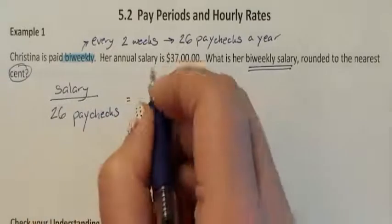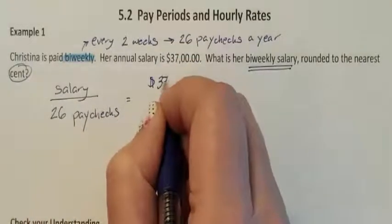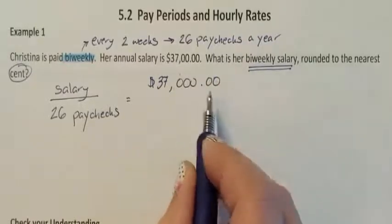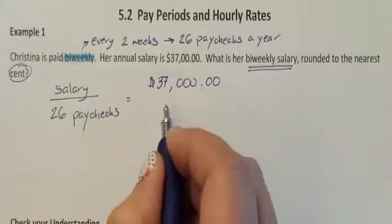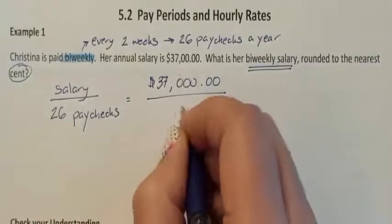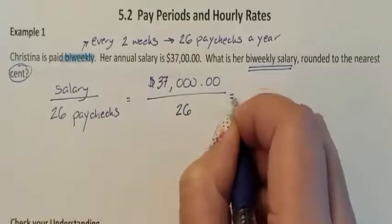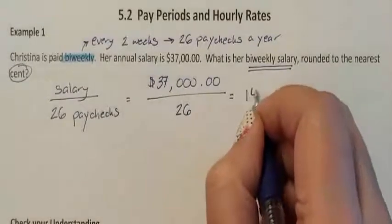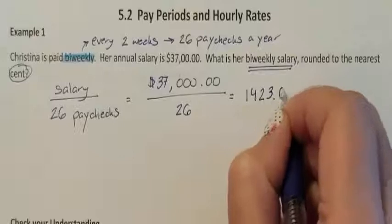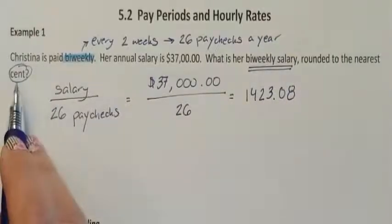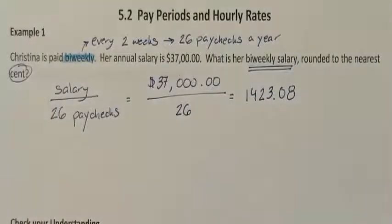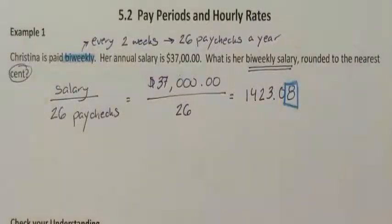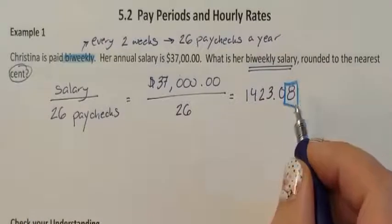We need to take her annual salary of $37,000 and divide it by 26 paychecks. Make sure you put the comma in to hold the place value, include the decimal, and the cents. $37,000 divided by 26 on the calculator gives me 1,423.08. It asks us to round to the nearest cent — this is already rounded.